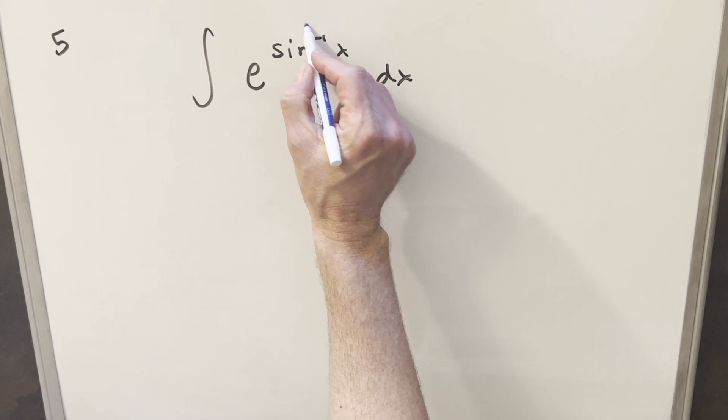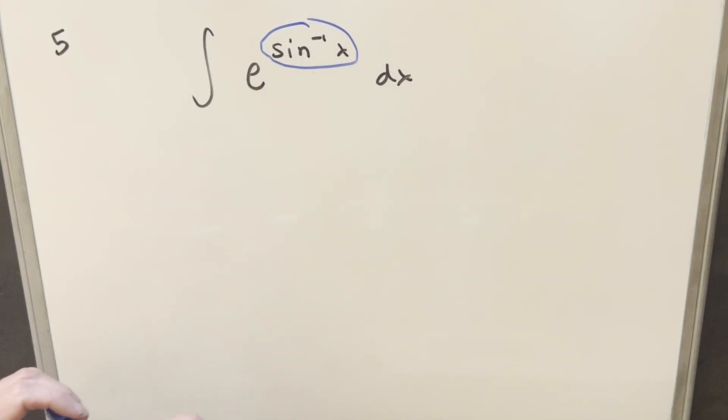Alright, not too many things to consider here. What I want to deal with, we just don't like having arcsin as the exponent there, so we'll try to handle that by just making a u substitution for that.